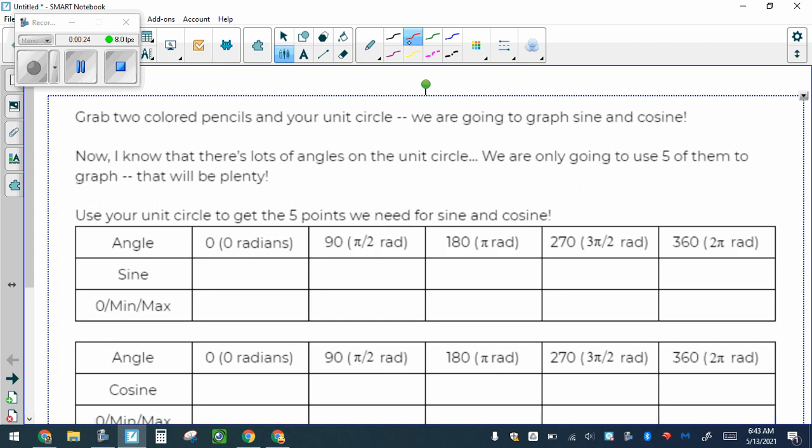The first thing we should do is look up all these values on the trig circle. Sine at 0 is 0, sine at π/2 is 1, sine at 180 is 0, sine at 270 or 3π/2 is -1, and sine at 360, which is the same as 0, goes back to 0.